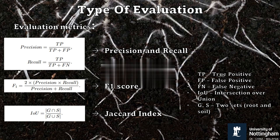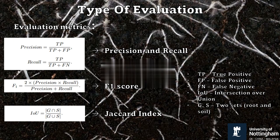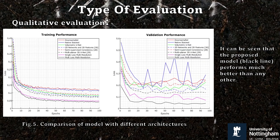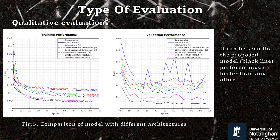The F1 score gives an overall model performance by taking both precision and recall into account. The Jaccard index is also used to measure the overlap between the prediction and ground truth. Scores closer to one for both F1 and Jaccard index indicate better segmentation performance. The model is also compared to other architectures as shown.